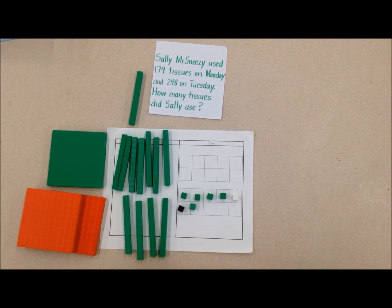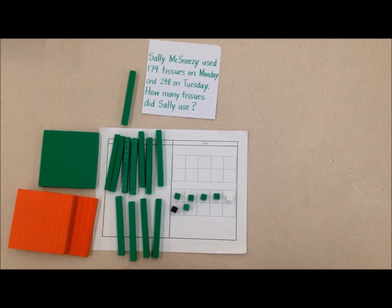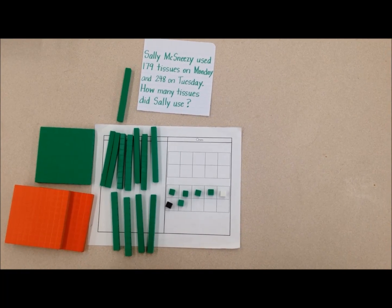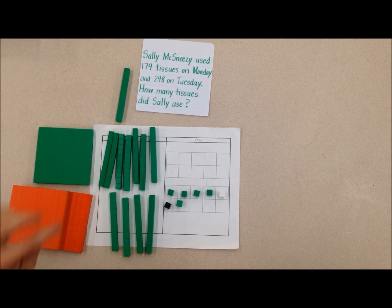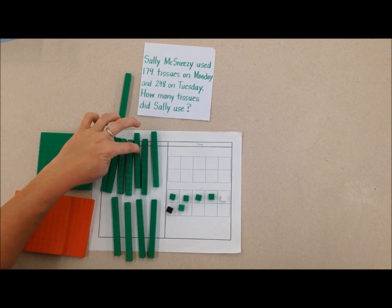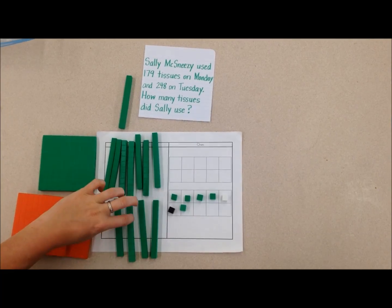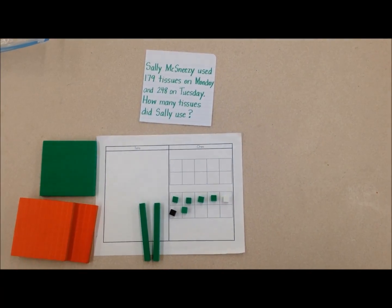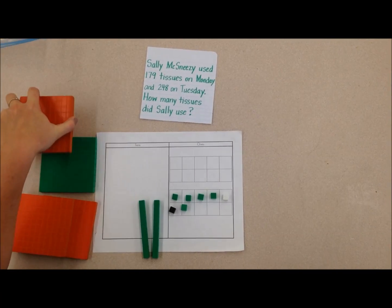But now I look here, and I have a lot of tens, and I know that if I have 10 tens, I can make a 100, because 10 tens composes together to make a 100. So let's see, I have 1, 2, 3, 4, 5, 6, 7, 8, 9, 10. So all of these, I can exchange for another 100.